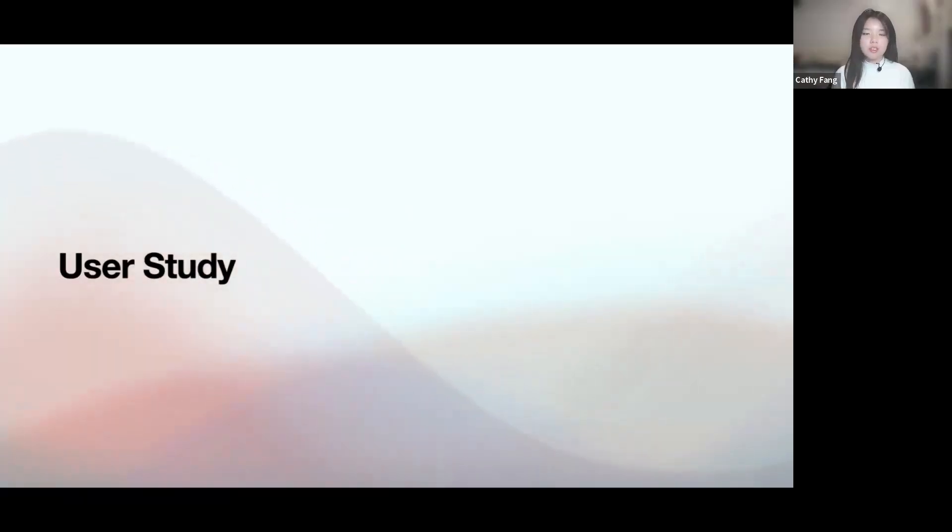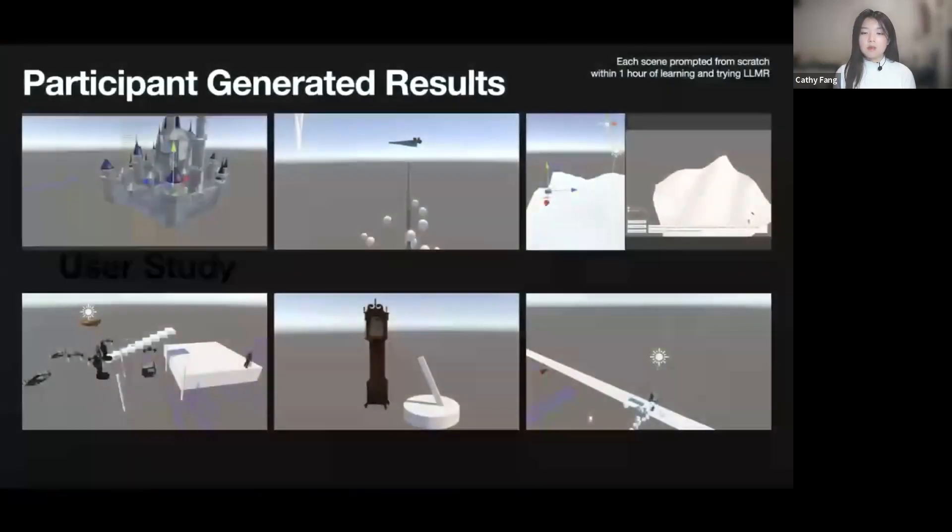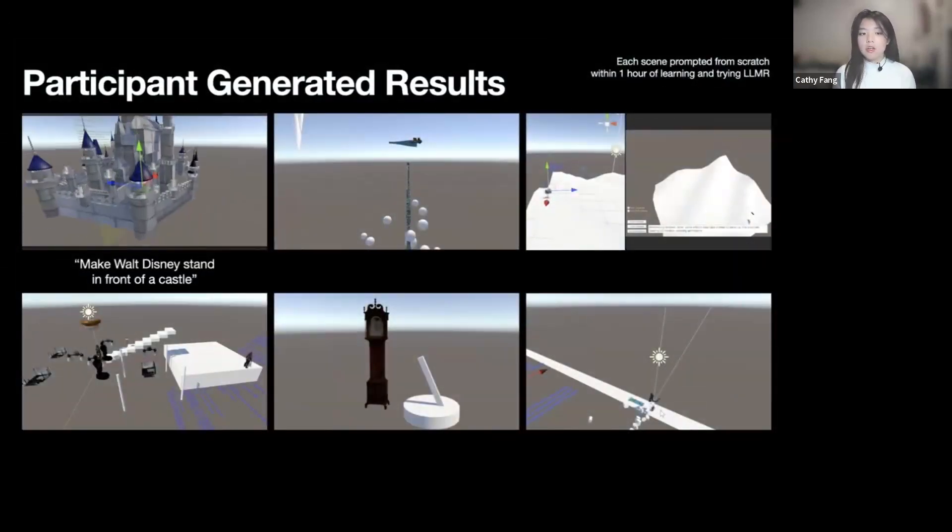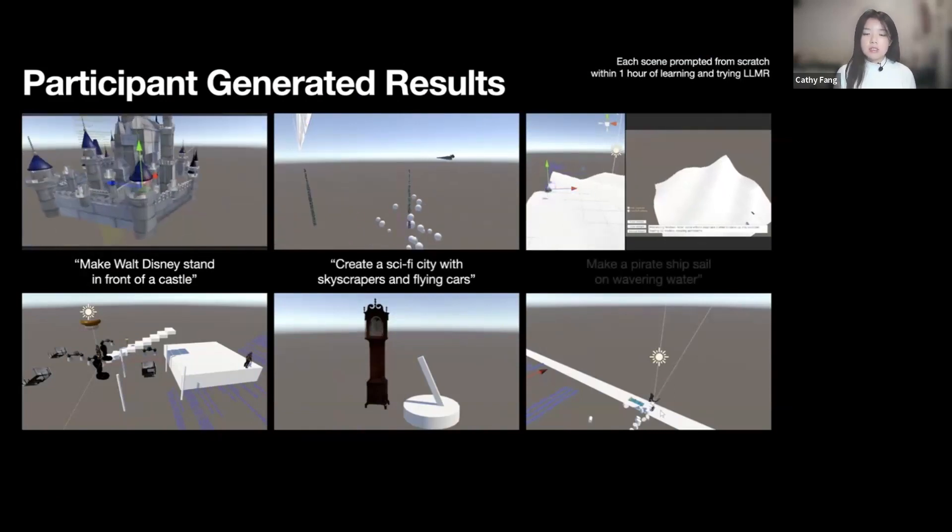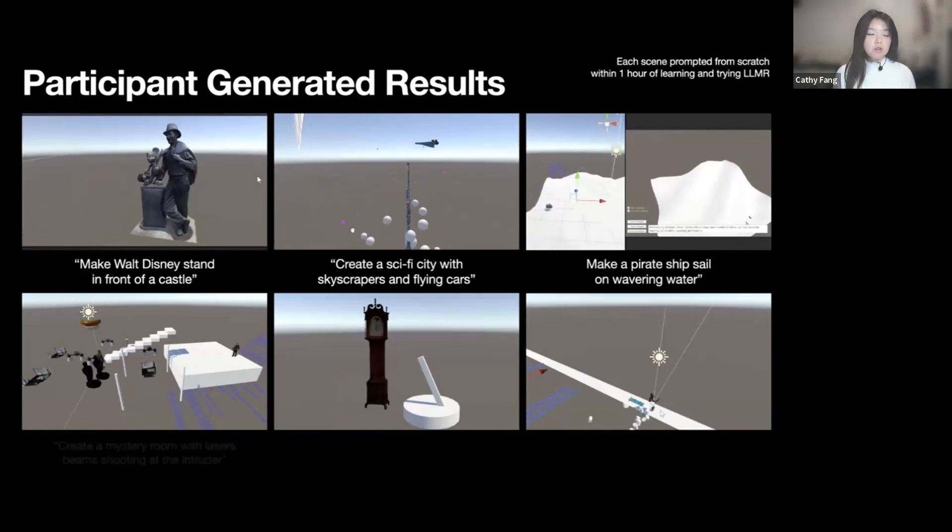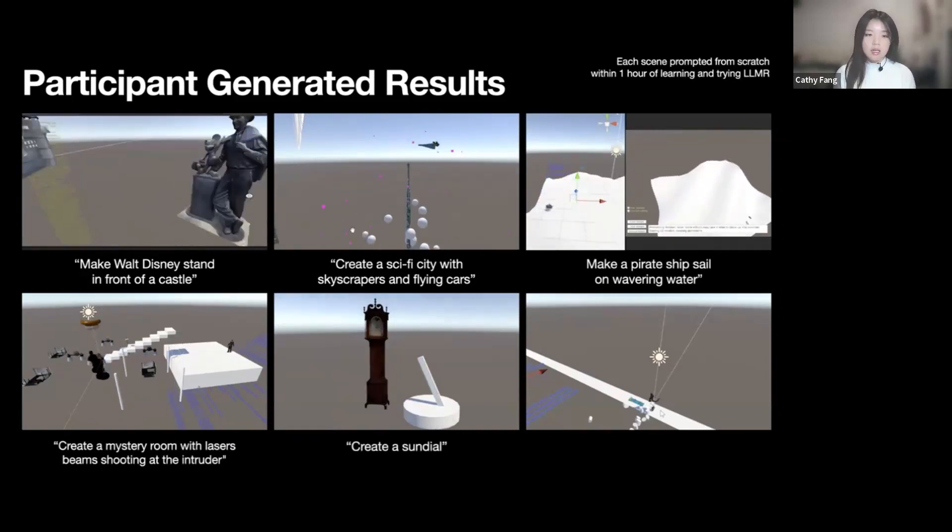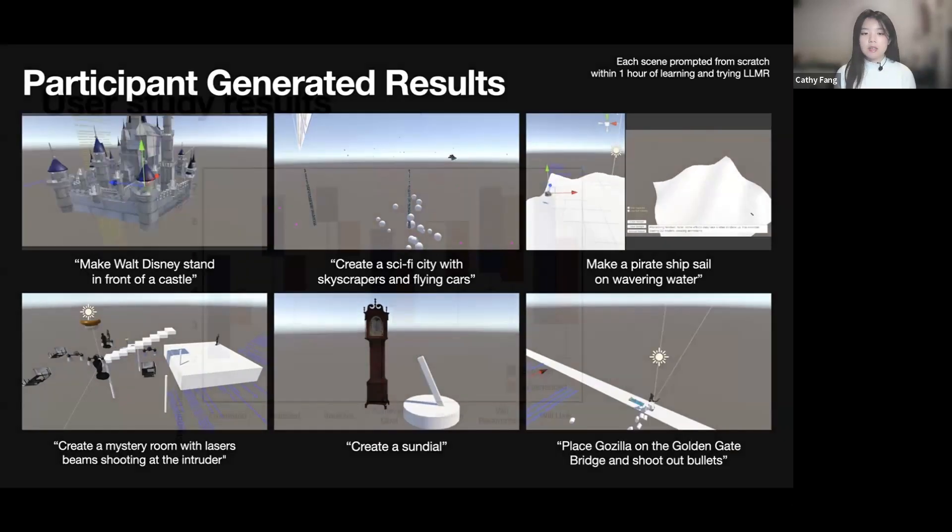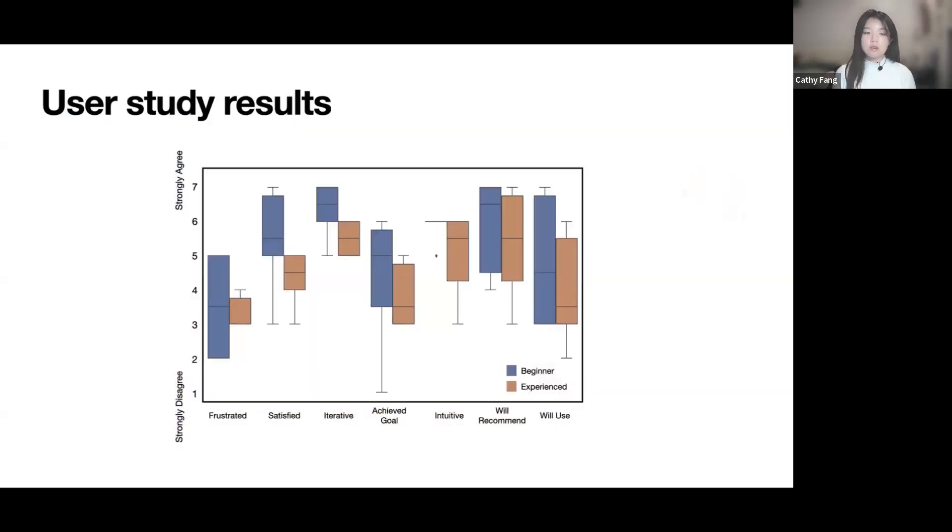The numerical evaluation focused on the compilation and runtime error in a generated code, but we also want to evaluate the quality of the output and the usability of our framework. So we recruited 12 users with different levels of experience with Unity, and they spent about one to two hours using our framework. And here are some of the worlds they've created. The outputs vary from cities to asteroid-like games, and some even recreated their professional work, such as rigging camera angles and generating animations.